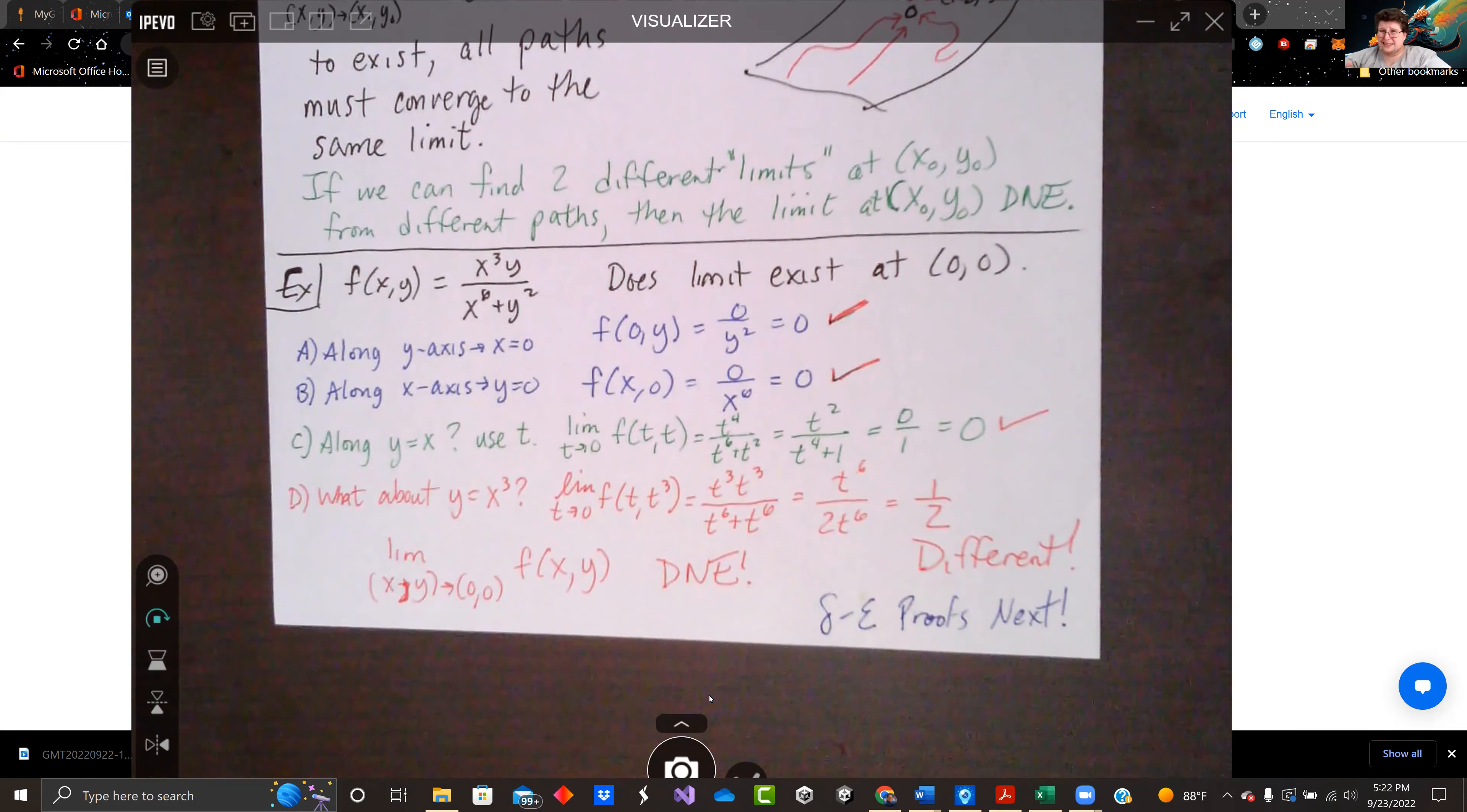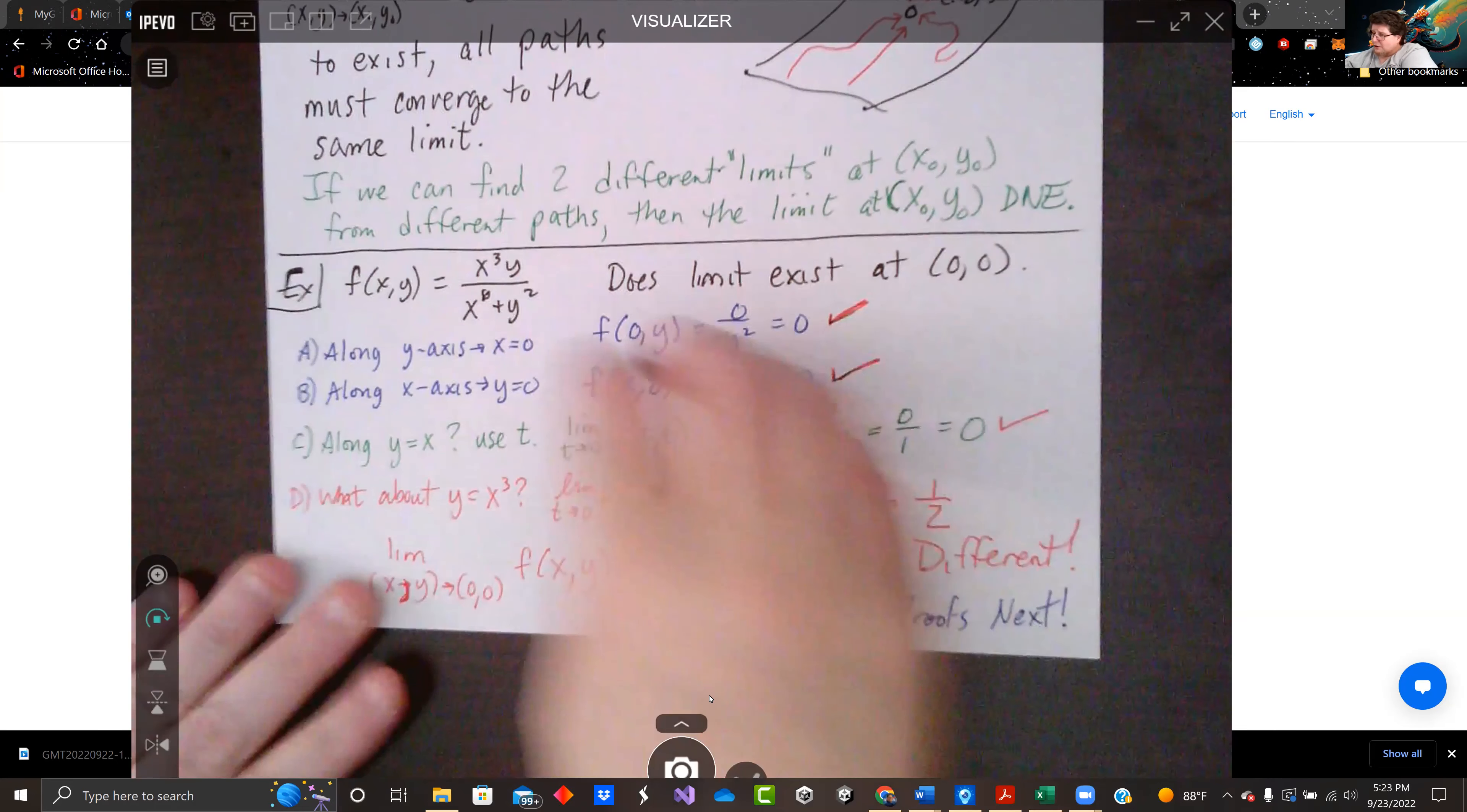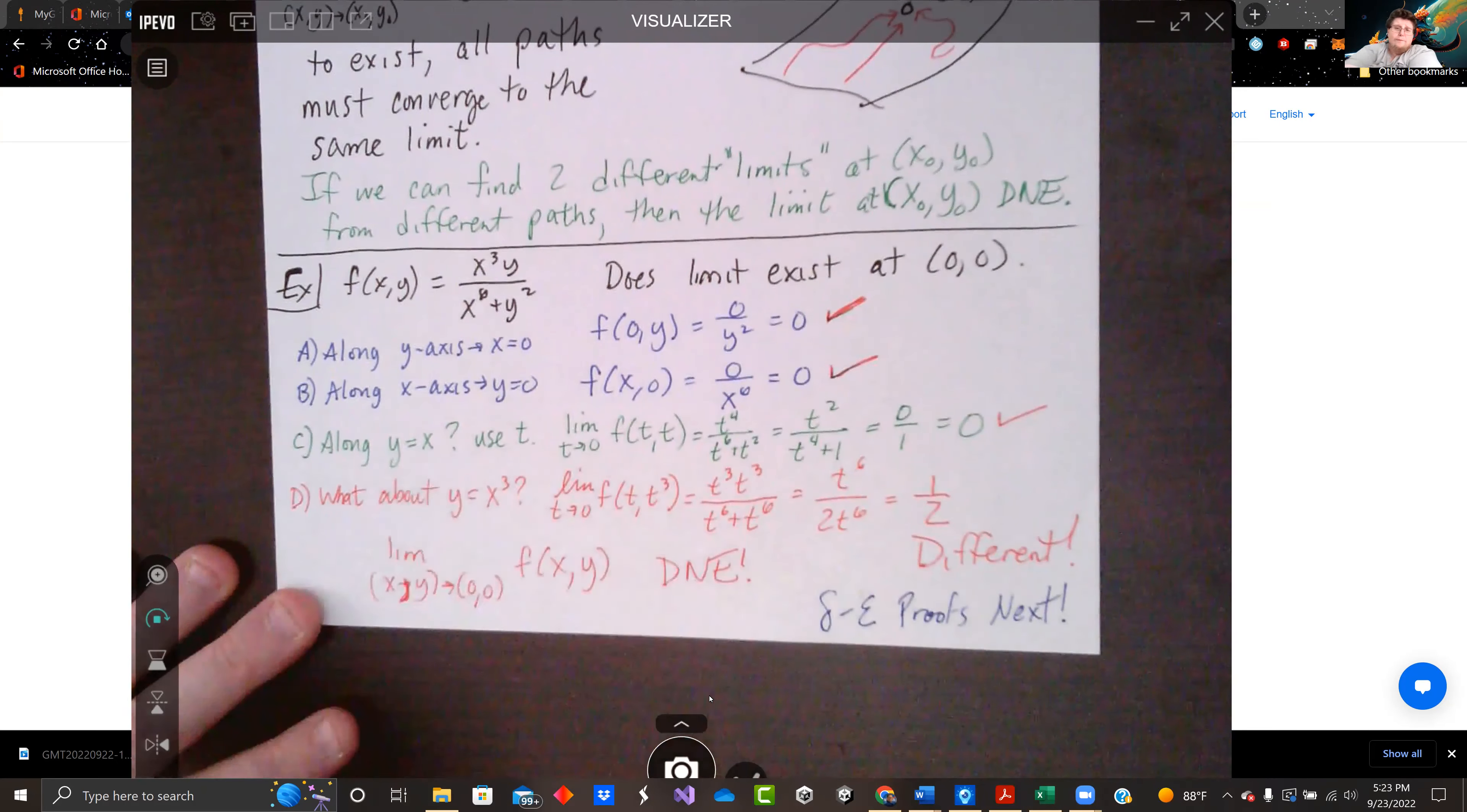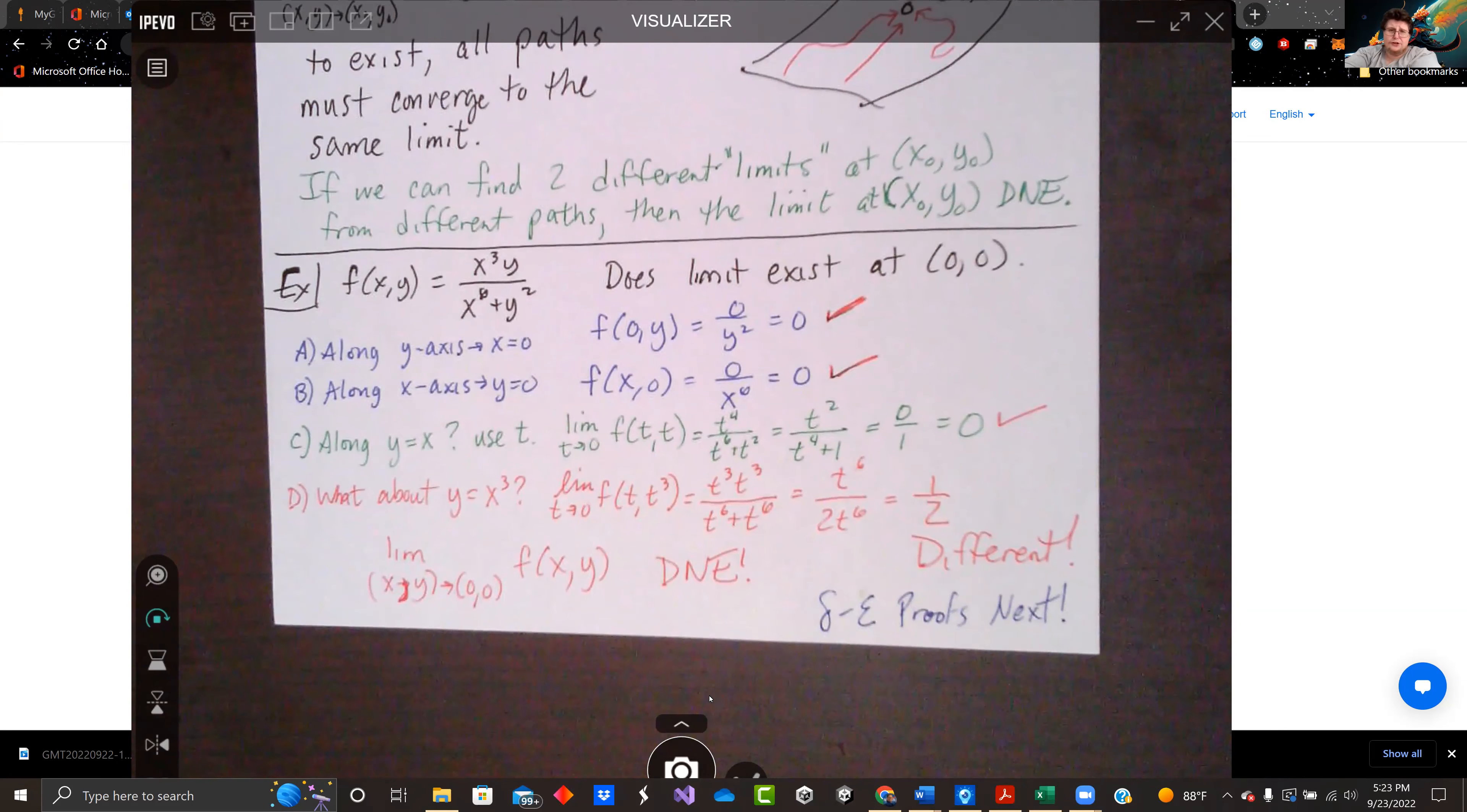So even though all the straight line paths along the y-axis, along the x-axis, along y=x, those straight line paths all yielded the same result. When we took a curvy nature like y=x³, we got a different limit, so the limit does not exist.